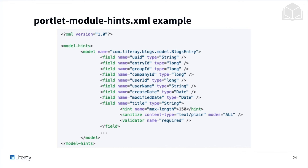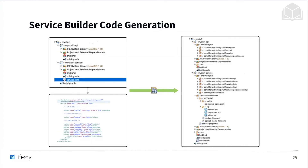For Service Builder code generation: you write your service XML to define all of the entities, all of the relationships, and the finders that you want. Then we run Service Builder. After running it, it takes the service XML, parses through it, and creates a file structure. It will create the implementation, create the model, and piece together the dependencies so that you can write and develop very quickly.